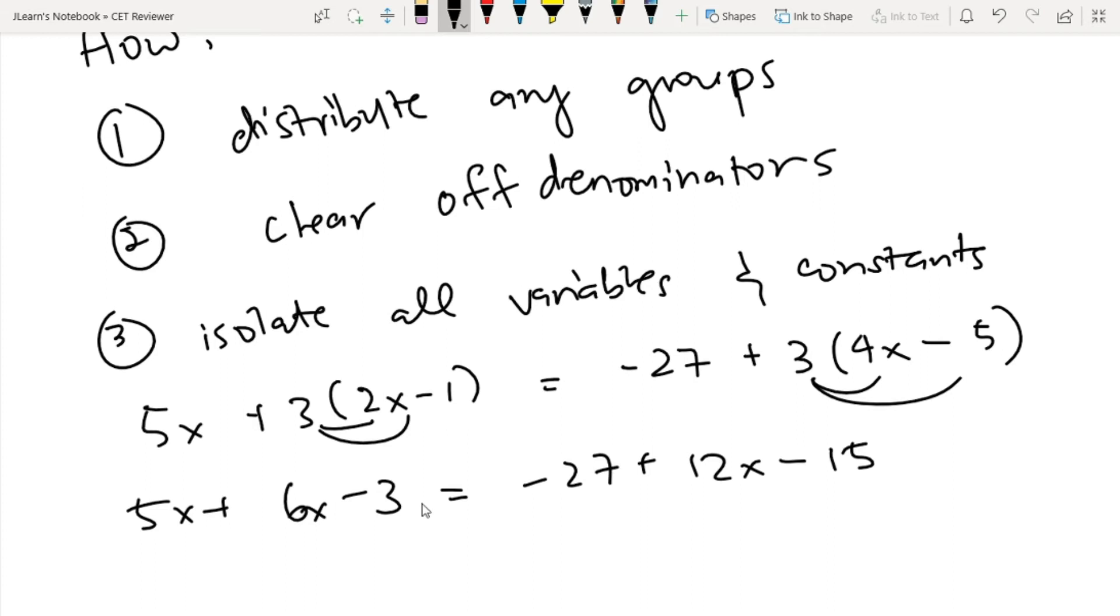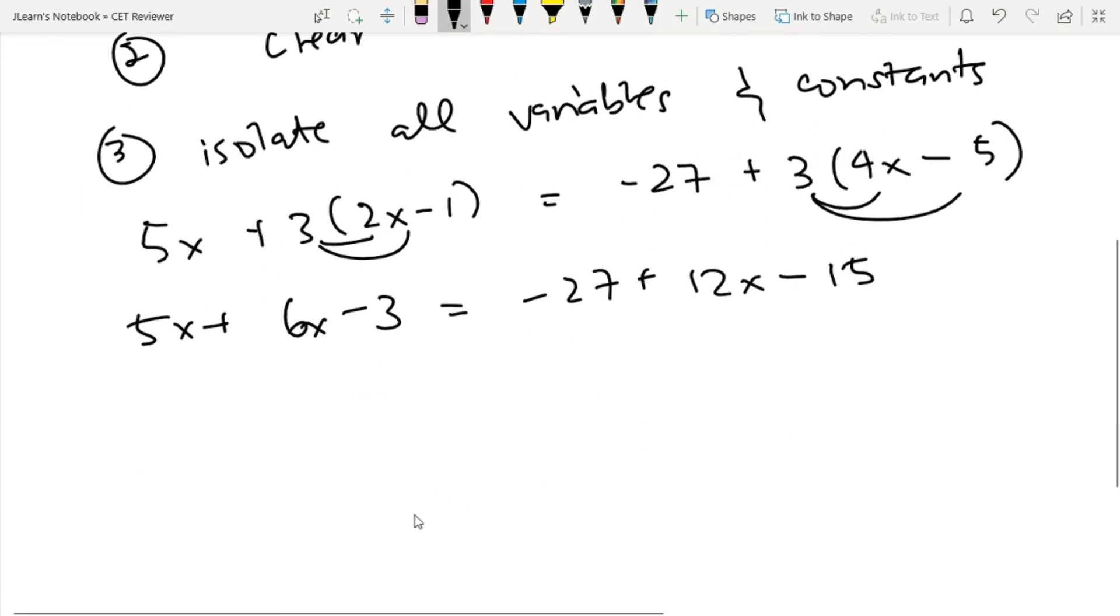Third is we isolate all variables and constants. So how do we do that? First we combine constants on the left side and right side. We can add these two. That will be 11X, and then minus 3 will be left untouched. And here, we can add the negative 27 and negative 15. So this will be negative 42. Then 12X will be left untouched, so plus 12X.